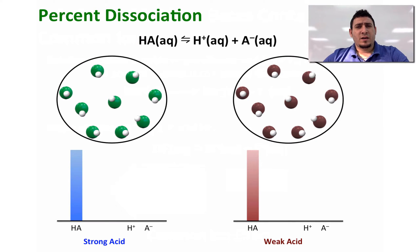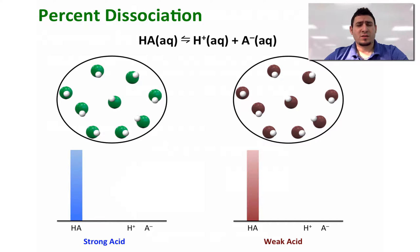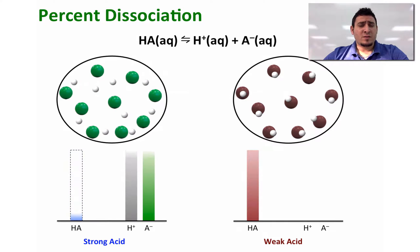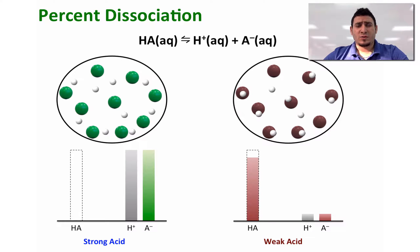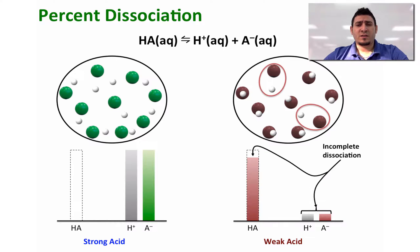Now, percent dissociation is only valid for weak acids, because strong acids we consider to completely dissociate, giving H plus and A minus. However, in the case of a weak acid, some molecules of the acid will dissociate, giving certain concentrations of H plus and A minus — an incomplete dissociation. By determining the percent dissociation of the acid we can know the remaining concentration, or the concentrations of H plus and A minus that formed.